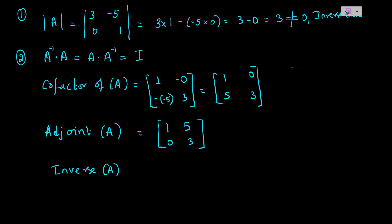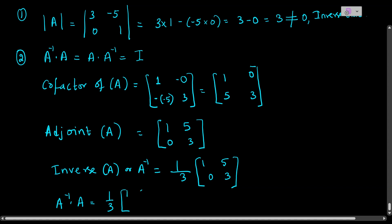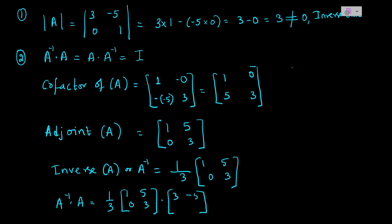Therefore A inverse equals (1/det(A)) times adjoint(A) = (1/3) × [1, 5; 0, 3]. Now we multiply A inverse times A: that is (1/3) × [1, 5; 0, 3] times [3, −5; 0, 1].